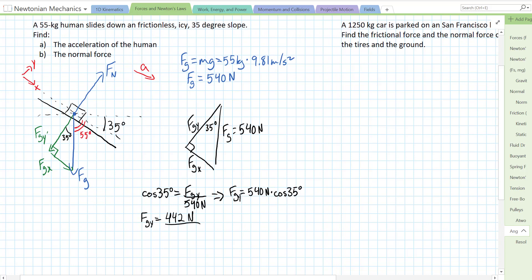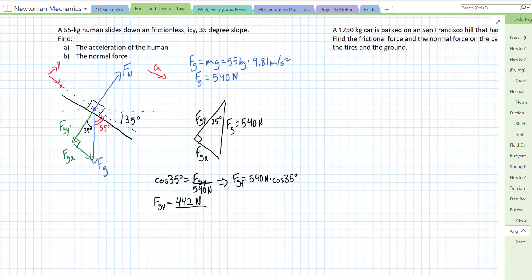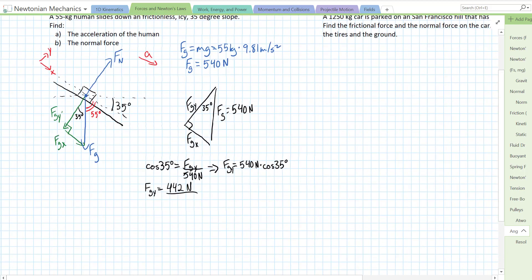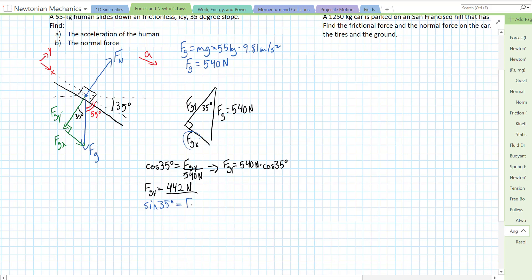We do the same to find fgx. Let's move a little bit up. So, since fgx over here, let's do it in blue, is opposite our angle, we're going to do the trig function that does opposite and hypotenuse. That's sine. Sine of theta, 35 degrees, equals opposite over hypotenuse. So, fgx over 540 newtons.